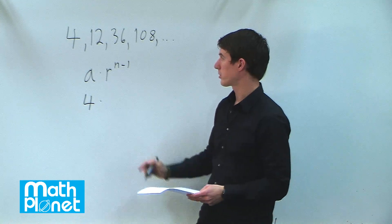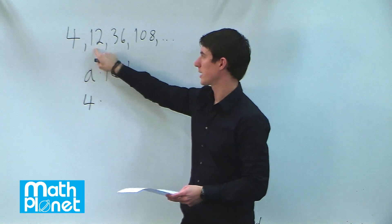r is the rate, sometimes called the quotient, which is the number that you multiply this by to get this.